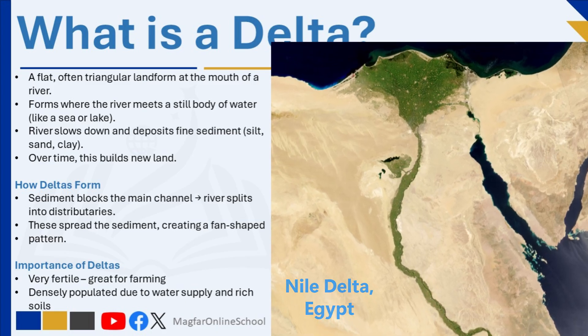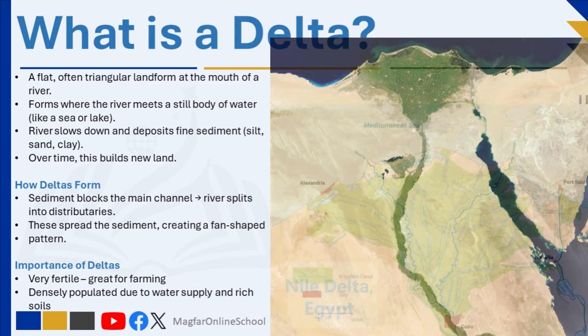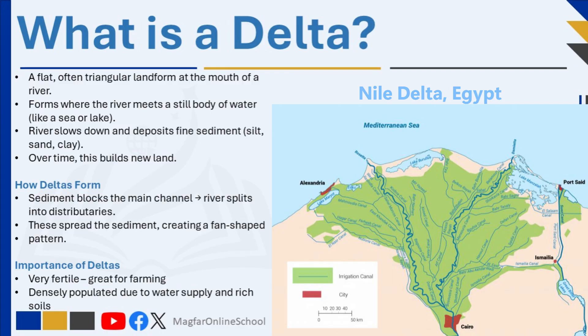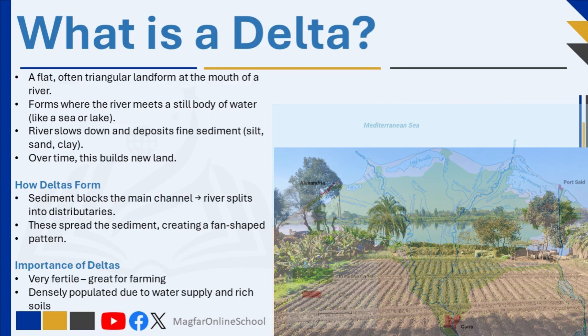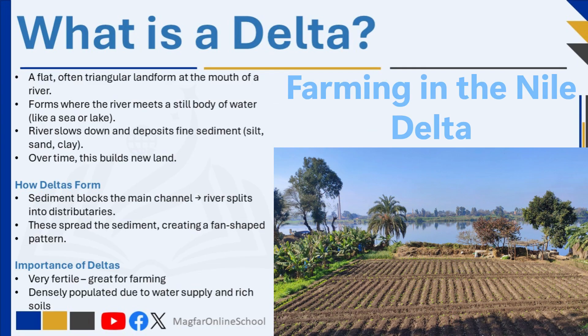In short, the lower course of a river is where it slows down and deposits material, creating important landforms like floodplains, levees, and deltas that support farming and human settlement.